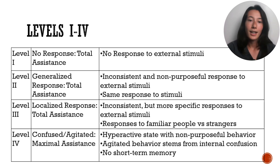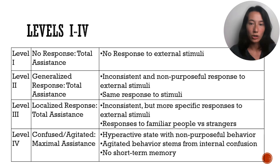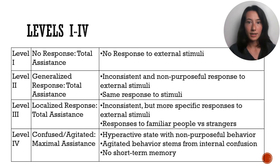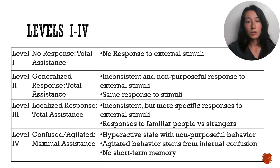Level 3: this is when we get a more specific reaction to an external stimulus. So if I tickle the shoulder again, they will more consistently reach over to scratch it. It's still inconsistent — they might continue to respond with other movements, like maybe just opening their mouth — but it is more consistent than that of a Level 2. Furthermore, people at this level might be able to respond to a familiar face.